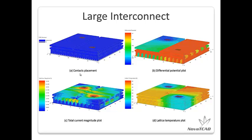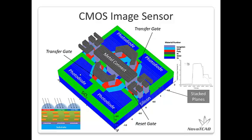This slide shows the simulation of on-resistance from a large interconnect to study the effect of metal de-biasing. With small bias voltage, we can observe the current magnitude and lattice temperature distribution plots. This complicated structure is built with 100 Z planes. The last example of 3D straight planes is the CMOS image sensor, where four photodiodes are connected with reset gates, transfer gates, and metal interconnects.